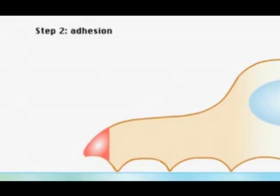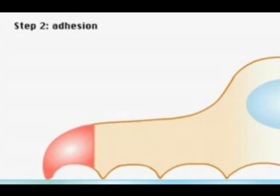The newly formed filipodia then attaches to the substratum at a specific point. It is not currently known how exactly the cell adheres to the substratum and is a hot research topic. The adhesion helps the cell anchor onto the substratum for further movement.